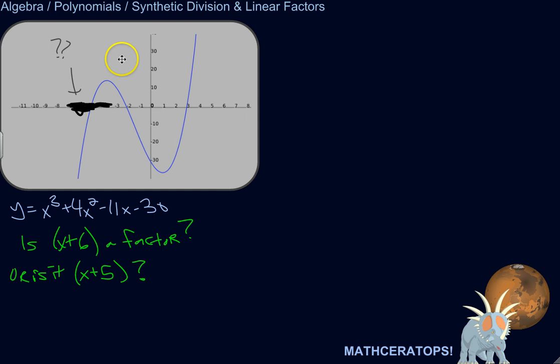But let's face it, you're going to have exercises where you're just asked if some linear form is a factor of a polynomial, and you're not going to be allowed to graph it, or you're not going to have access to a graphic calculator, or whatever. So here's how to figure it out.